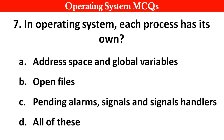Next question: In operating systems, each process has its own: Options: A. Address space and global variables. B. Open files. C. Pending alarms, signals and signal handlers. D. All of these. Right answer is option D: All of these.